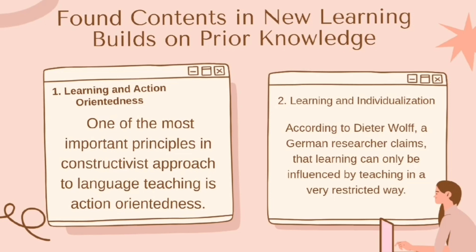The second one is learning and individualization. According to Dieter Wolf, a German researcher, learning can only be influenced by teaching in a very restricted way. It is the learner who is allowed to decide about the fragments and sections of material provided by the teacher during the lesson. This possibility to make choices fosters learners' autonomy, considering their preferable style and type of learning, and allows students to work on their current knowledge through self-dependency and learning by doing.